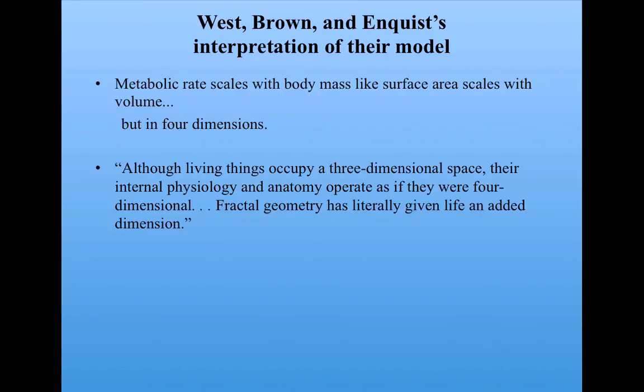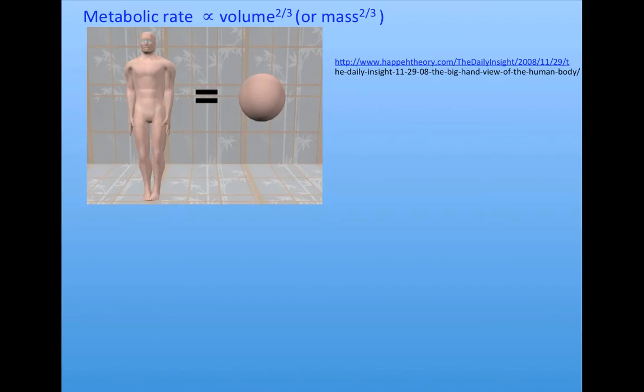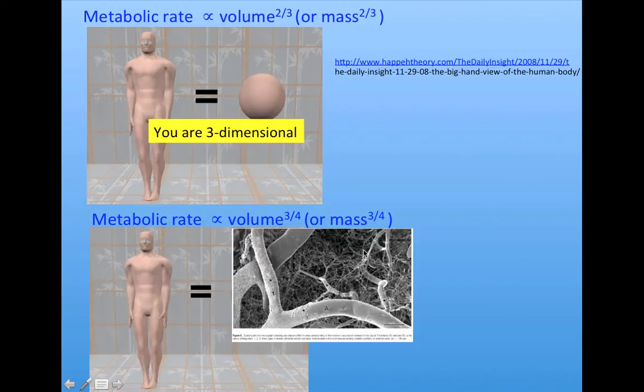West-Brown and Enquist say, although living things occupy a three-dimensional space, their internal physiology and anatomy operate as if they were four-dimensional. Fractal geometry has literally given life an added dimension. Let me show a picture to illustrate. Earlier on, we idealized organisms as spheres, and the surface hypothesis argued that since surface area is proportional to volume to the two-thirds power, metabolic rate is proportional to body mass to the two-thirds power. That's if we assume that you are three-dimensional.